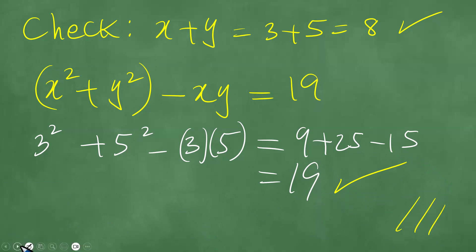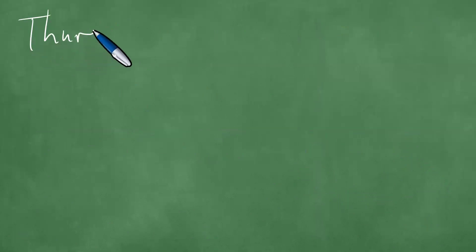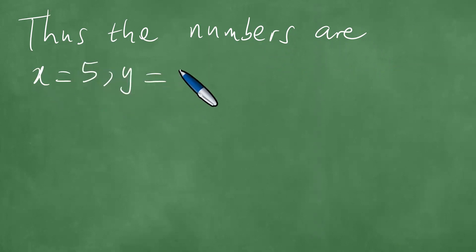Thus, we conclude. The numbers are: x = 5, y = 3, or x = 3, y = 5. So then, this is the result, and these are the answers to the problem. This is the solution to this particular problem. We have solved this in a step-by-step manner. Thanks everybody for watching, and goodbye to you.